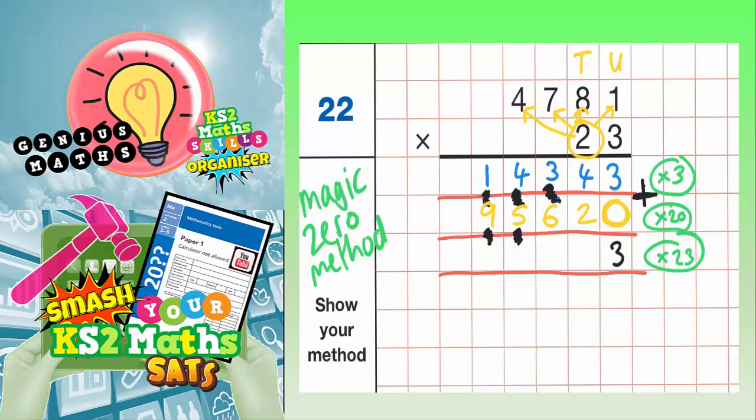So 3 plus 0 is 3. 4 plus 2 is 6. 3 plus 6 is 9. 4 plus 5 is 9. And 1 plus 9 is 10. Put the 0 in, carry the 1. But because we've run out of columns, that 1 can just go straight in. And our final answer is 109,963.